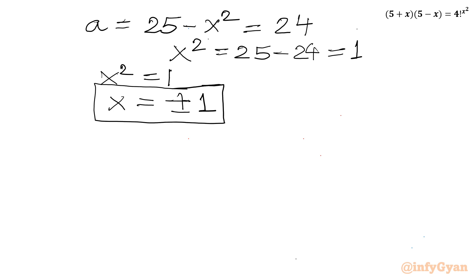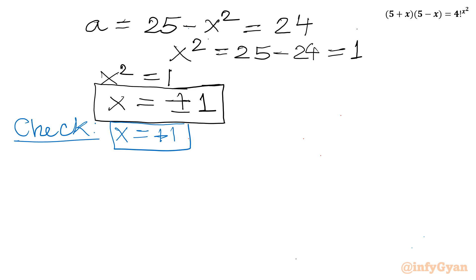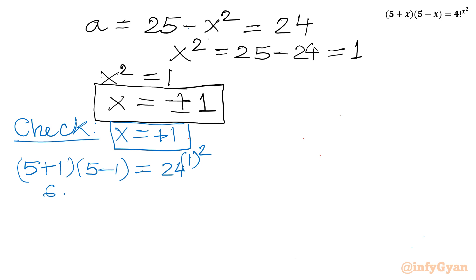Let's verify the result — whether it satisfies our equation or not. For x equals plus 1: left hand side is 5 plus 1 times 5 minus 1, which is 6 times 4 equals 24. Right hand side is 24 to the power 1 squared, which is 24 to the power 1, equals 24. So 24 equals 24 — it checks out. Now let us consider x equals minus 1: left hand side is 5 plus 1 times 5 minus 1, again 6 times 4 equals 24. Right hand side is 24 to the power of minus 1 squared equals 24 to the power 1 equals 24. So 24 equals 24 — minus 1 is also verified.